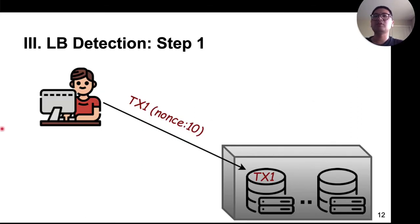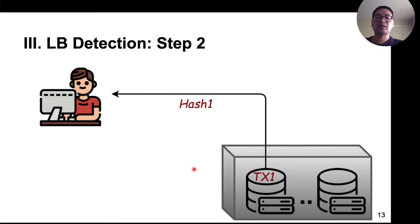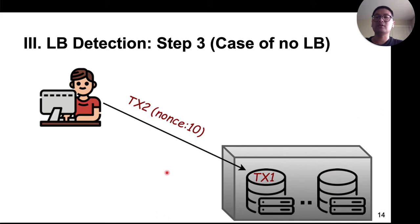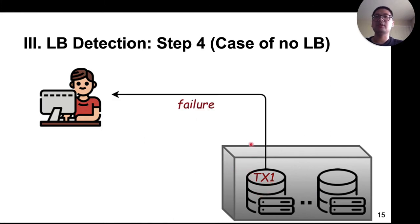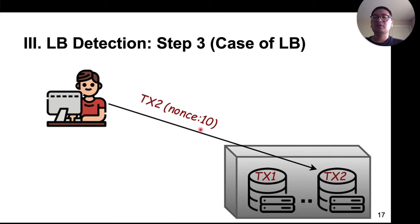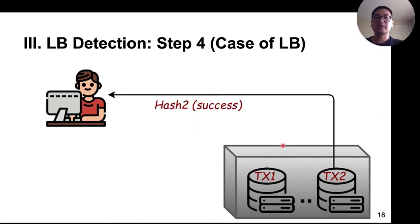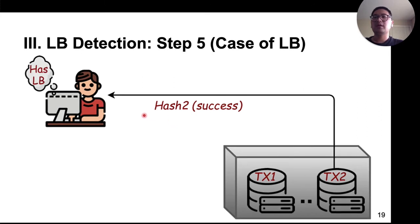Let me demo how our basic measurement works. First, we send the first orphan transaction to the RPC node, and assume it is accepted by the first backend node, which returns a hash. The node will not propagate the transaction to other backend nodes. Then we send the second orphan transaction. If it is accepted by the same backend node, it returns an error such as 'already known,' indicating no load balancer. If it is accepted by a different backend node, it returns another hash, indicating there is a load balancer.